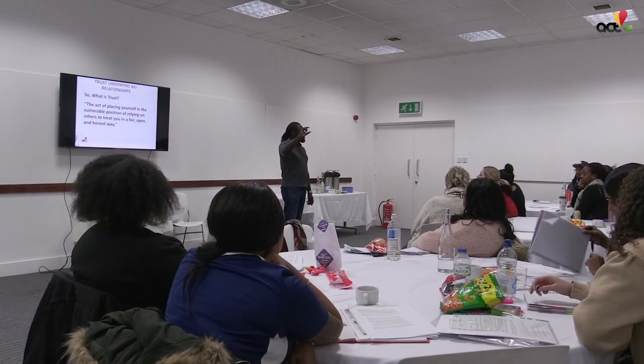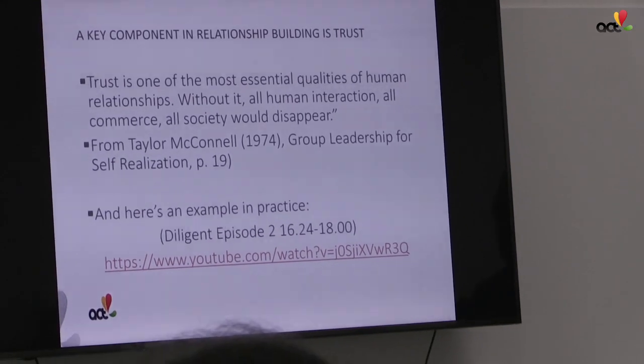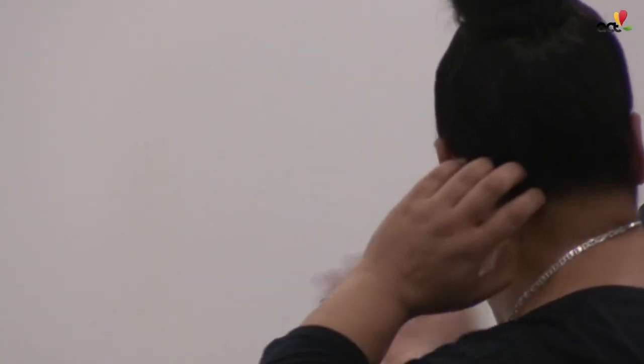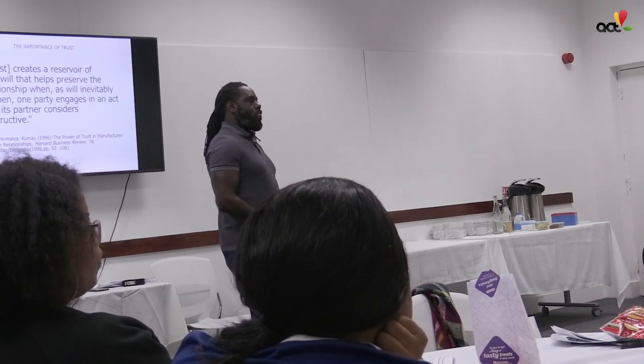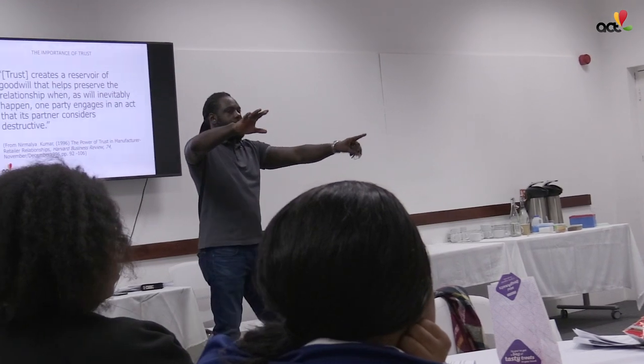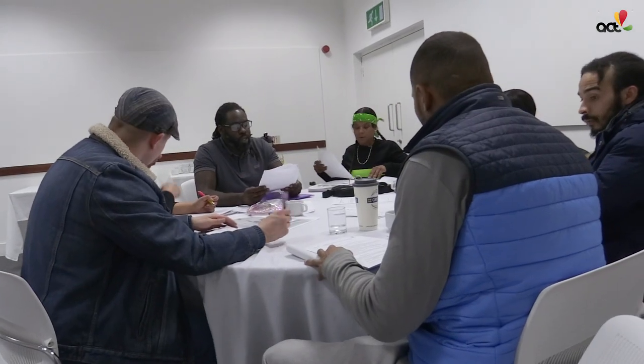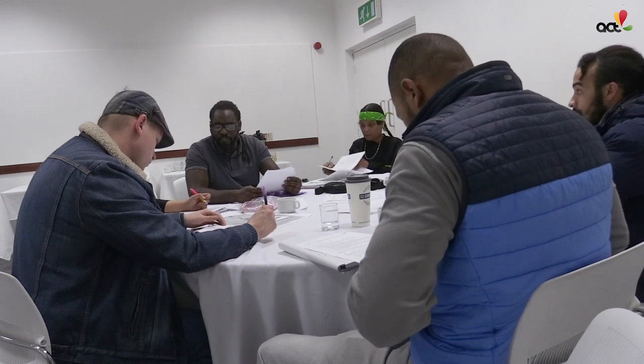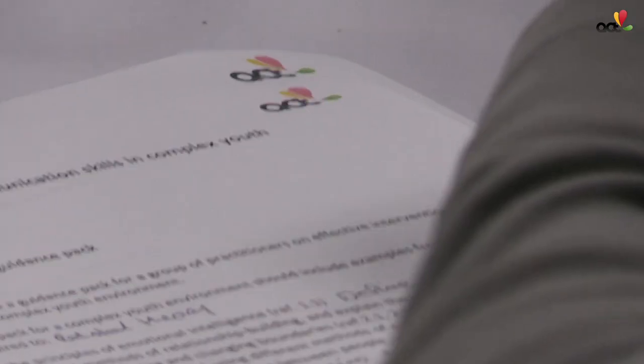A lot of people on the course may have core skills but not really be aware of them, and where they're weak the course brings that element to make them holistically aware. It tackles the gang issue from different perspectives — mental health, emotional intelligence, social factors, policy, and exit strategies. It gives you a whole spectrum, a toolkit or guidance pack you can take back into your profession to best meet the needs of the young people you're dealing with.